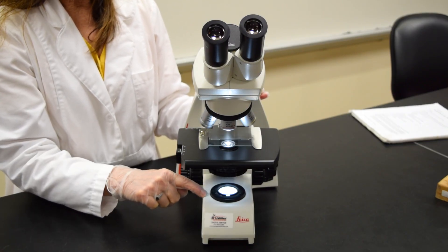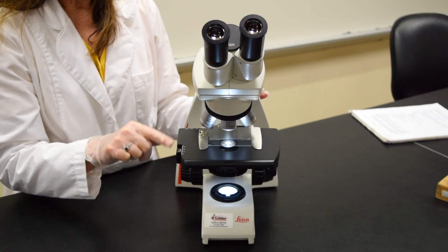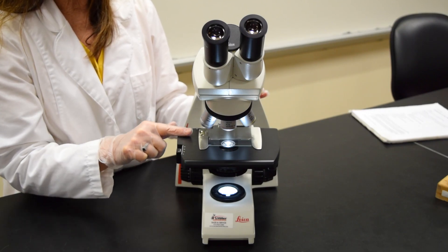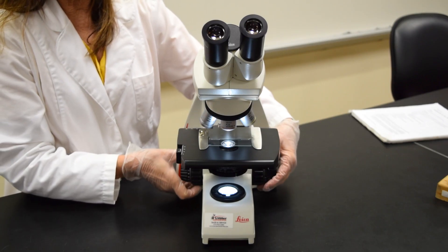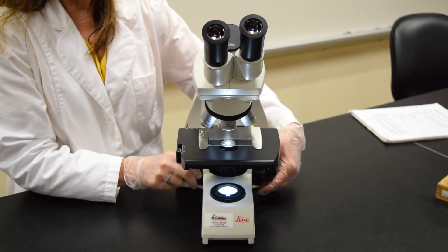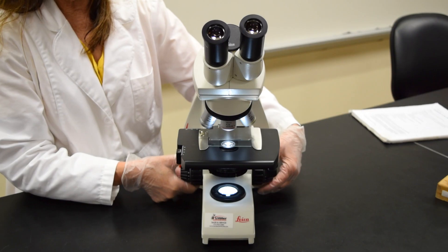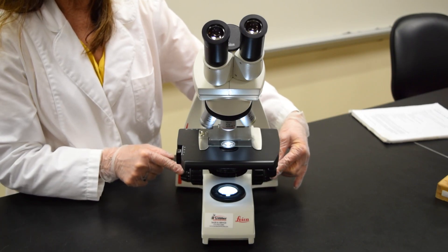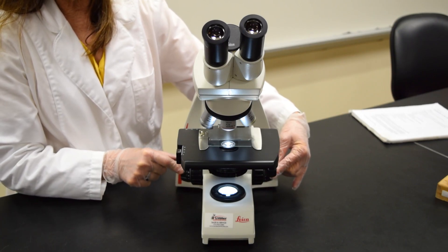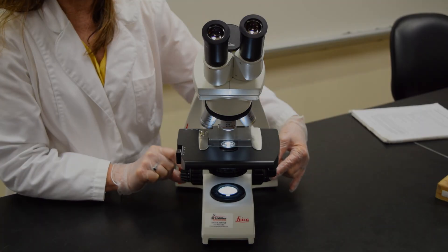On the base, you'll find the light or the illuminator. To move the stage closer to the objectives on the arm, you're going to find two knobs. The coarse adjustment knob that moves the stage in large increments and should only be used for the scanning power. Connected to the coarse adjustment knob would be the fine adjustment knob that moves the stage in finer increments.